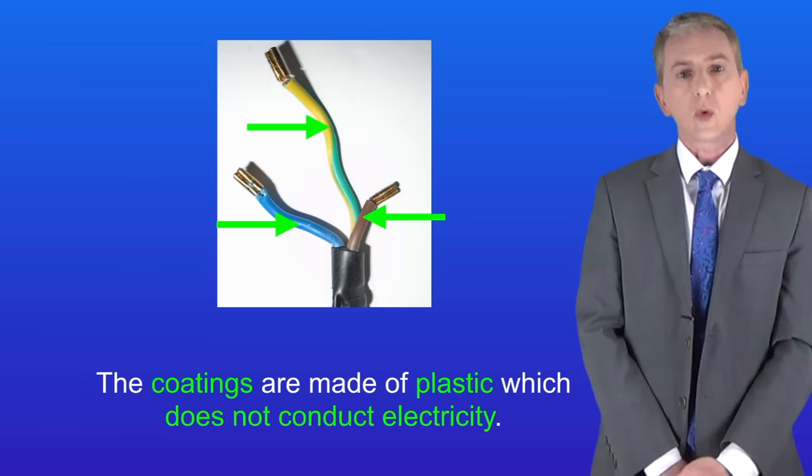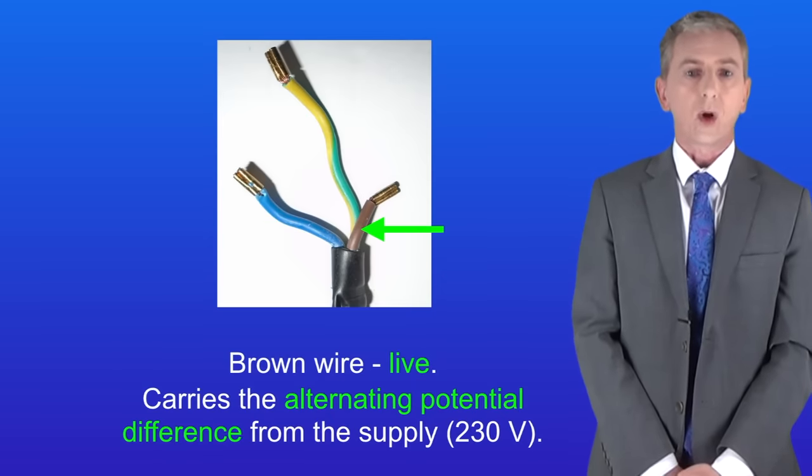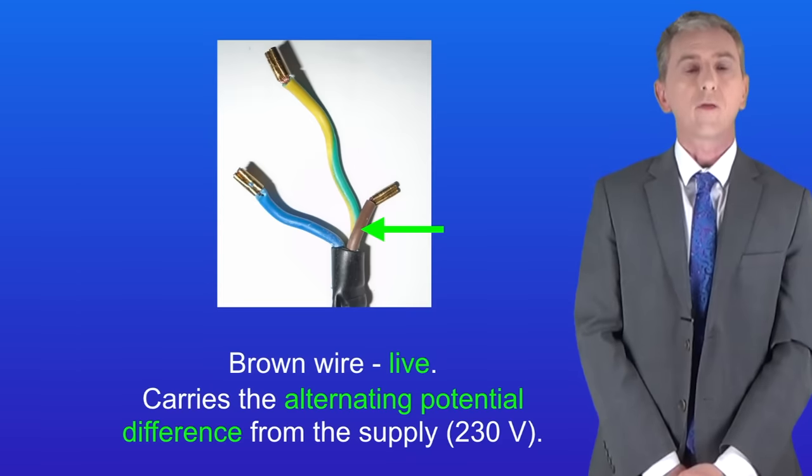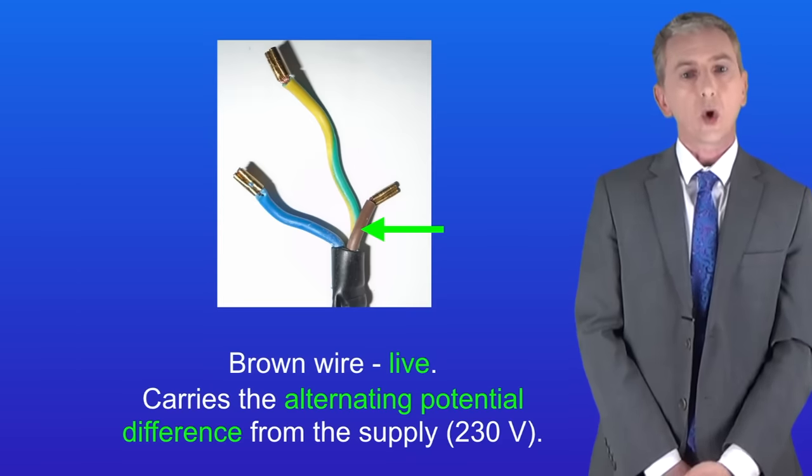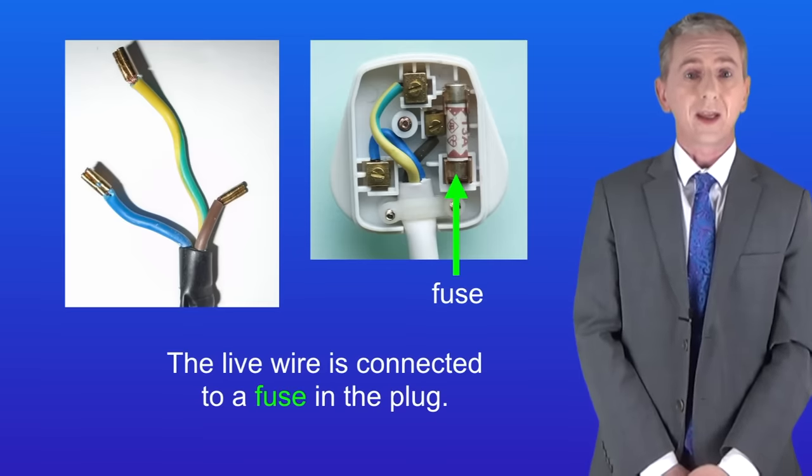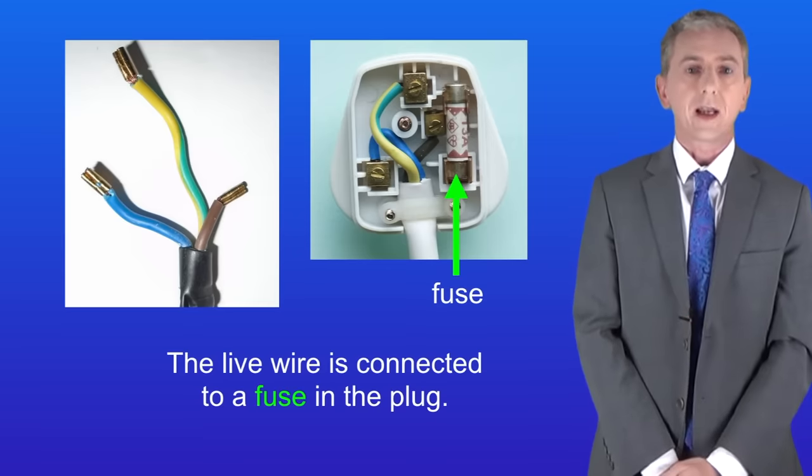We're going to look at the functions of each wire in turn and you need to learn these. The brown wire is called the live wire and the live wire carries a potential difference from the supply and is always around 230 volts. The live wire is connected to a fuse in the plug and I'm showing you that here. We're going to look at that later.